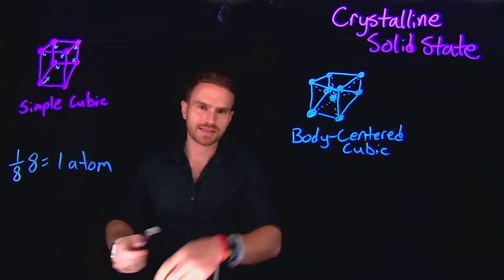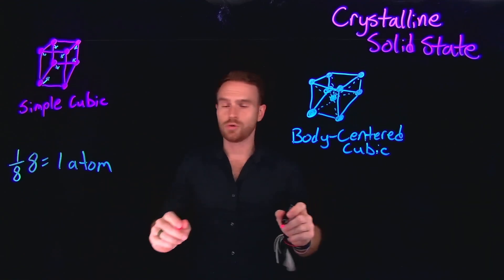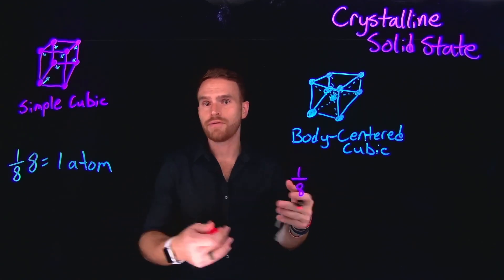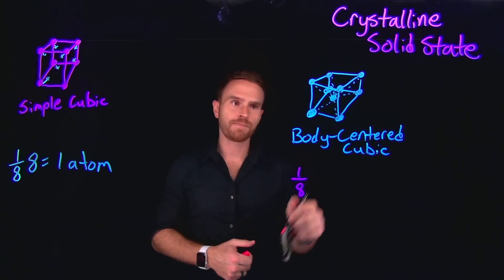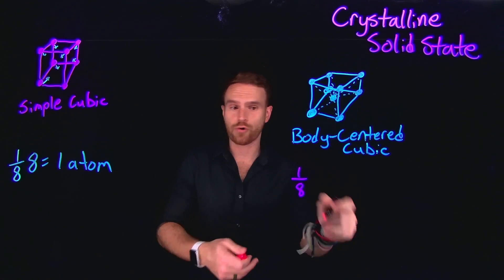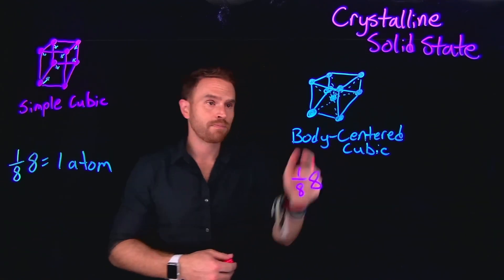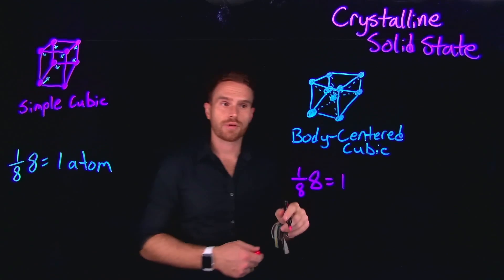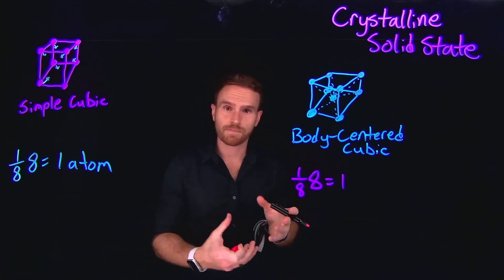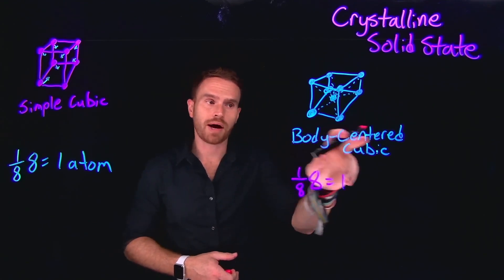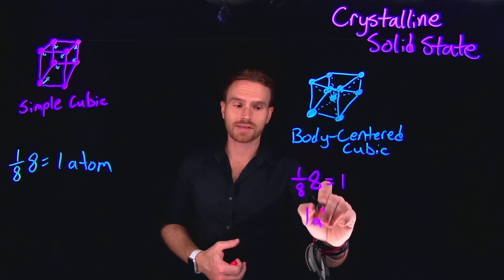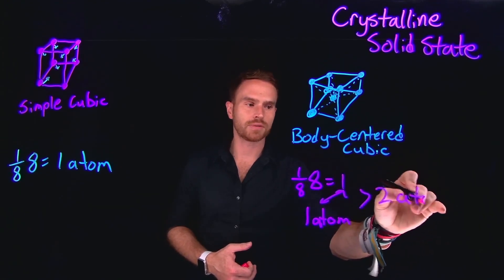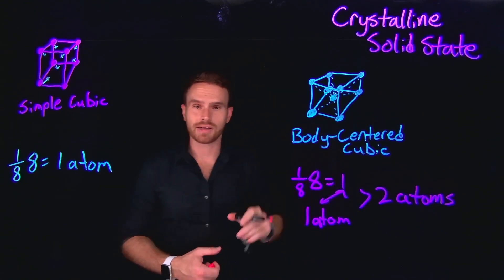Now let's take a look at body-centered cubic. Similar to the simple cubic structure, for every corner there is one-eighth of an atom contained inside of that unit cell. Just like in the simple cubic structure, there are eight corner atoms. Those eight corner atoms multiplied by one-eighth each give us one. However, we need to consider the fact that in the center of that cube there is an entire atom — that is the definition of body-centered cubic. Since there is a full atom inside, we add these two together to find that there are two total atoms contained inside of the body-centered cubic unit cell.